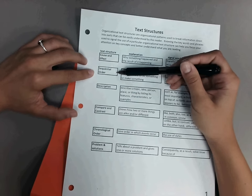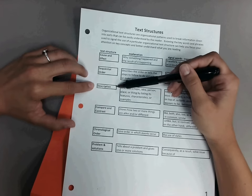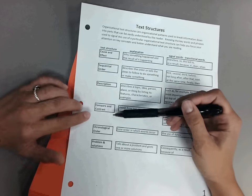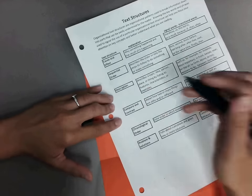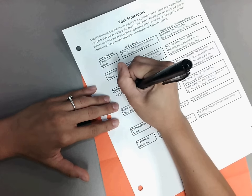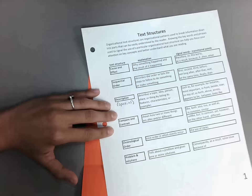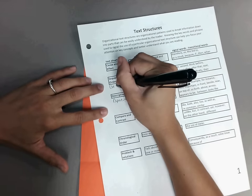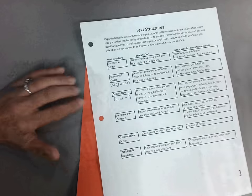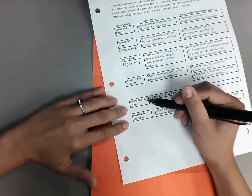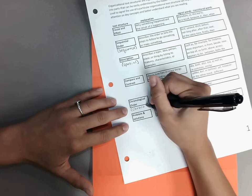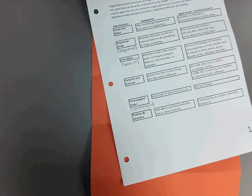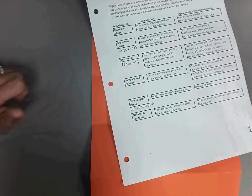They are cause and effect, sequential order or sequence, description or spatial, compare and contrast, chronological order, and problem and solution. Before we start, I want you to put underneath description: spatial, and underneath sequential order: sequence, and underneath chronological order: chronology. Because sometimes you'll see them shortened to that or changed to that.